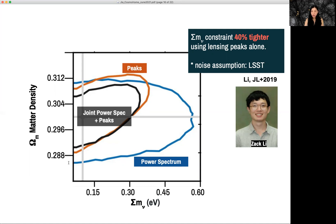So peak counts on its own is already more constraining than the power spectrum due to the fact that it contains information from all order in the lensing field.